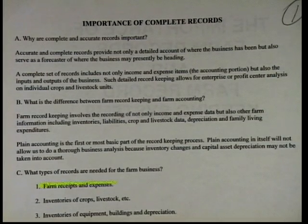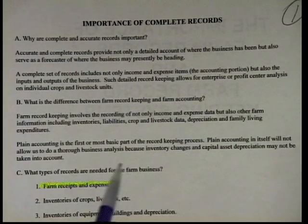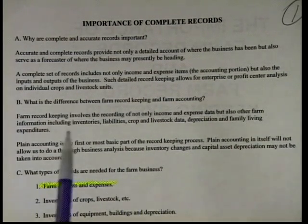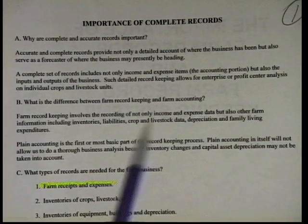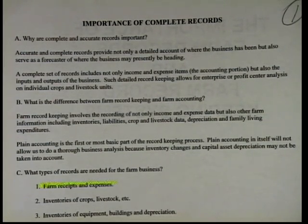We're just going to review a little bit on the importance of complete records. Some of this might be redundant — we've probably talked about it before. But obviously accurate and complete records are very important. It's going to go on about a complete set of records: income and expense. Some of this seems obvious, but you'd be surprised — I get out on farm visits and people think they're done with everything and they forgot to put in their automatic withdrawals. You're 90% done with your work if you didn't put in the other 10%.